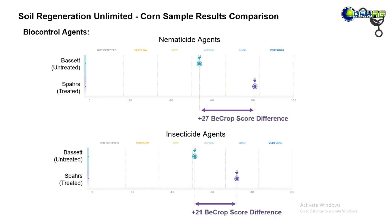Now, because there were some differences historically in the management of these fields and they aren't right next to each other, we can't definitively say it was the manure that drove these changes. But both fields had been tilled using the CurseBuster for the last three years or so and had been under very similar management, so the manure application was one of the major differences and may have had an influence on these insecticidal and nematicidal species.